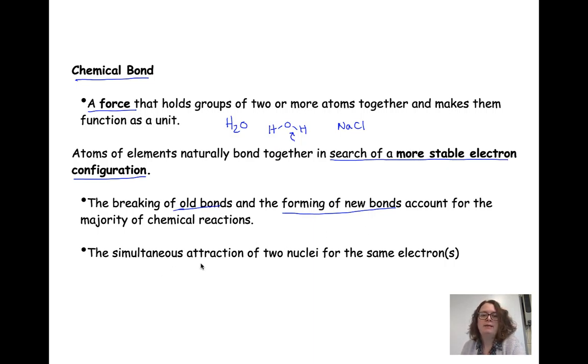We can also think of a bond as a simultaneous attraction of two nuclei for the same electrons. So if we have an atom of hydrogen with a nucleus, an atom of oxygen with a nucleus, and they have electrons, those nuclei are going to sort of compete or share over those electrons that are in between them.